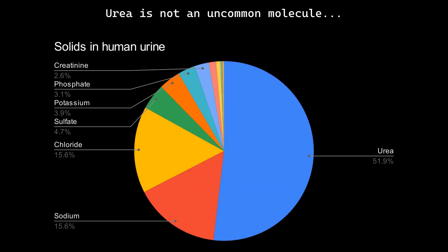Urea is a fairly prevalent molecule. In fact, it is the most prevalent molecule, aside from water, in human urine, and is also prevalent in the urine of other mammals.